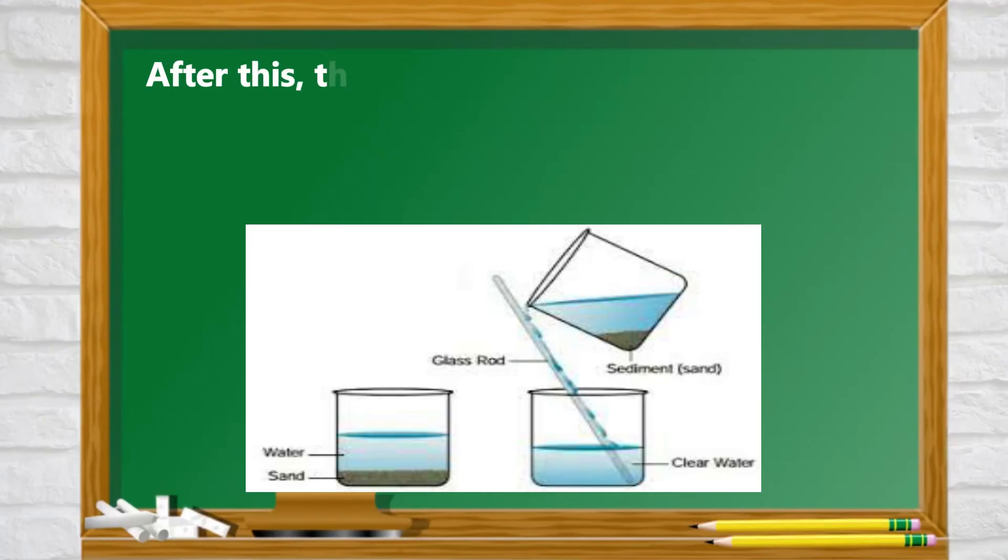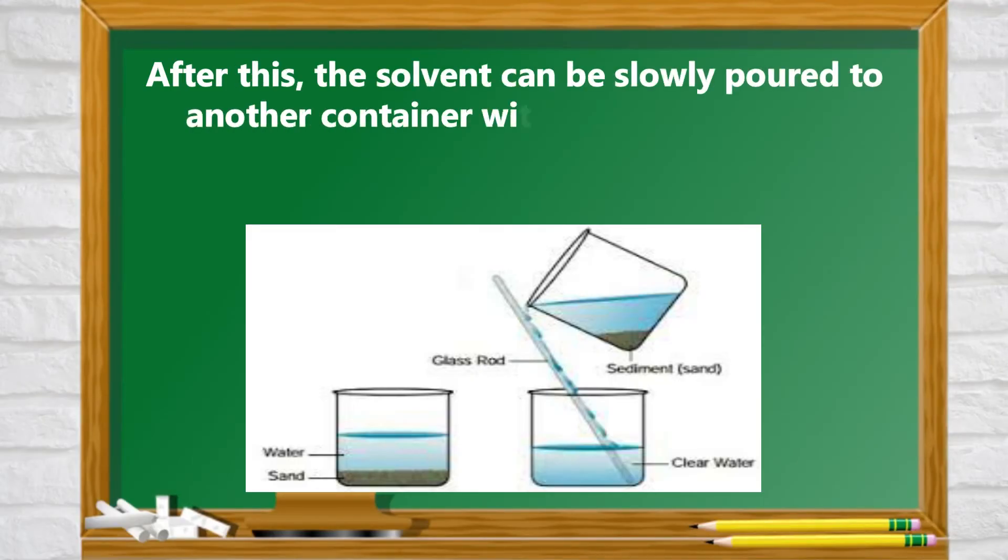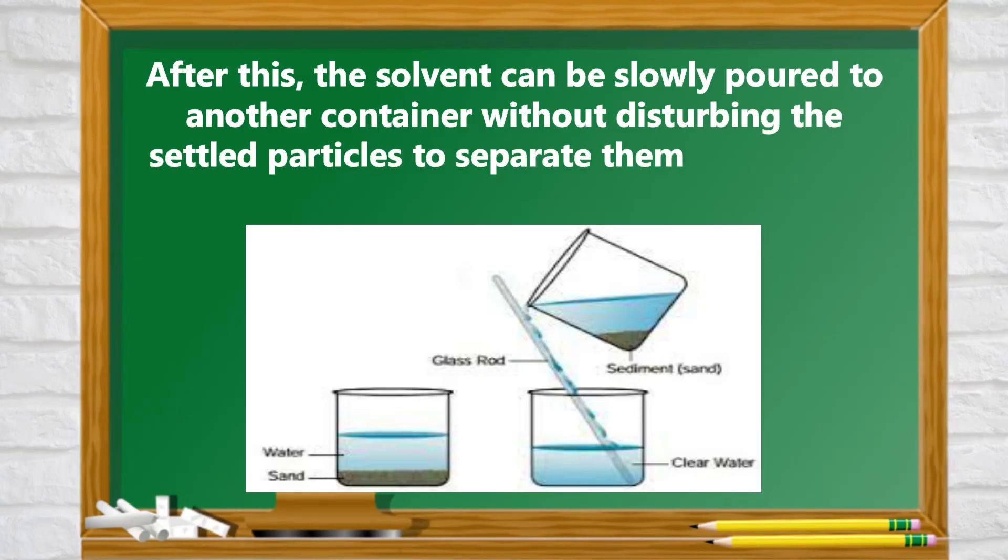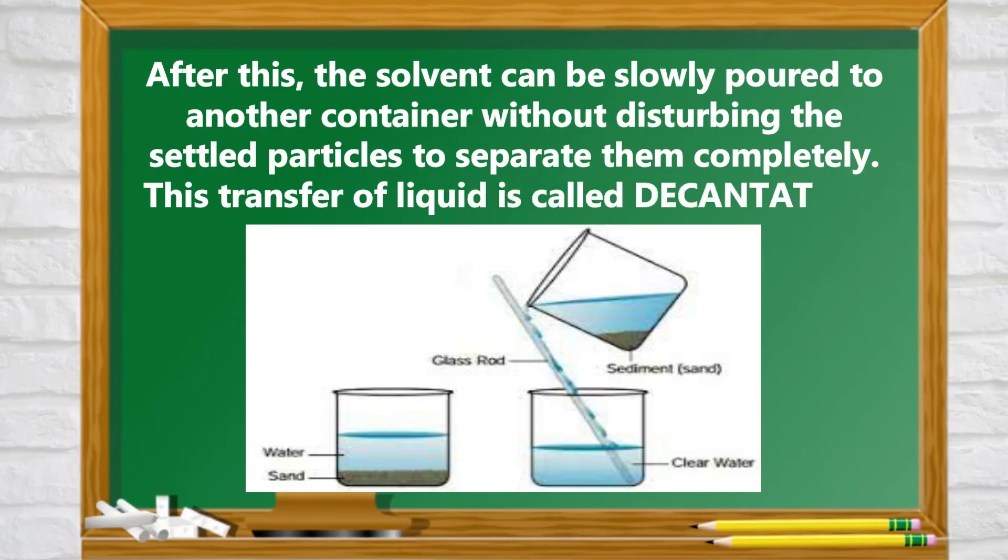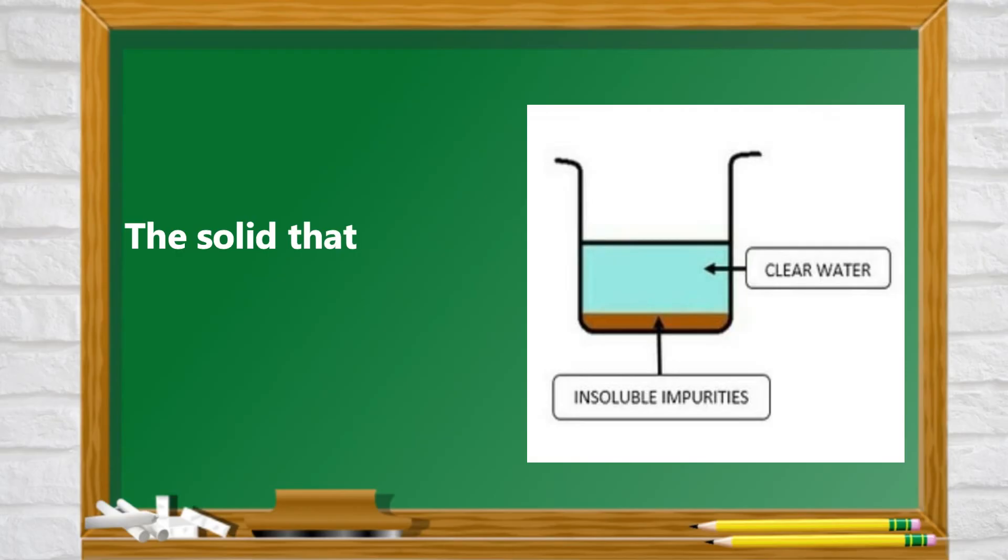After this, the solvent can be slowly poured to another container without disturbing the settled particles to separate them completely. This transfer of liquid is called decantation. The solid that remains is called precipitate.